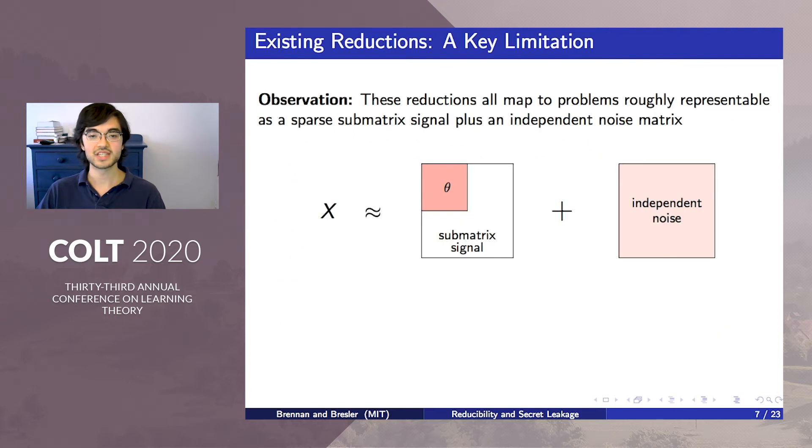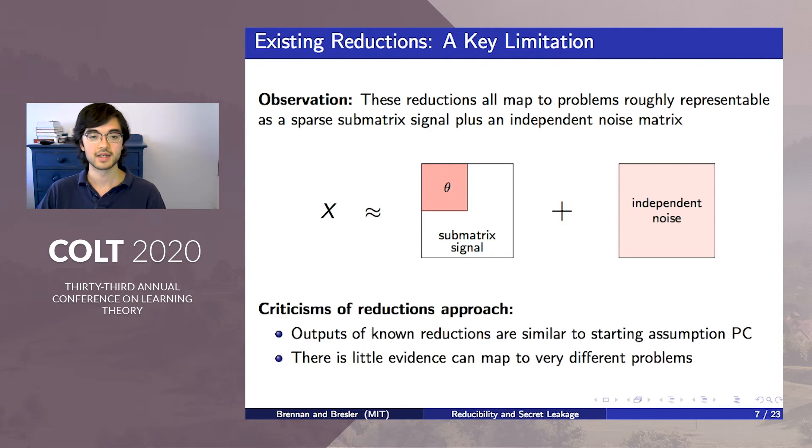However, these average case reductions in statistical problems have also been somewhat limited. They all map to problems roughly of the form sparse submatrix signal plus a matrix of independent noise, which is already similar to the starting assumption of planted clique. A common criticism of this approach is there is little evidence that it is possible to map to problems very different from planted clique. Since statistical computational gaps are found in a wide range of problems with all kinds of structure, this would be fatal in striving for a more complete understanding of statistical computational trade-offs through reductions.